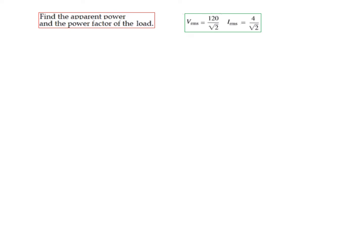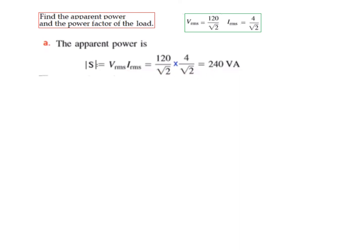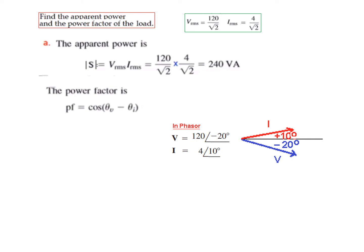The apparent power is simply the product of the two RMS values, giving 240 VA. To find the power factor, we use cosine(theta_V minus theta_I). Plotting the phasors, V has angle −10° and current has angle +20°. So theta_V minus theta_I equals −10 minus 20 = −30°, and cosine(−30°) = 0.866.